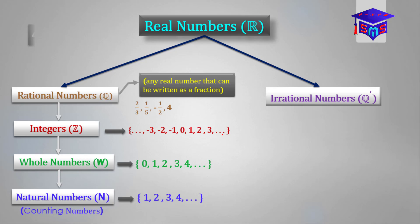Terminating and recurring numbers like 3.5 and 4.666 recurring can also be expressed as fractions or written in the form A over B. So therefore, they are also rational numbers. We'll talk about terminating and recurring numbers in the next video.